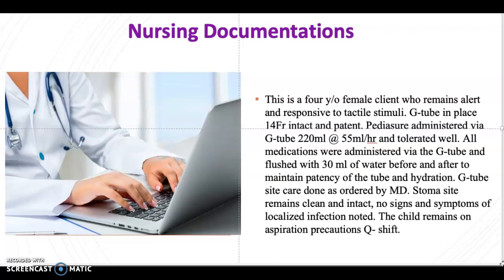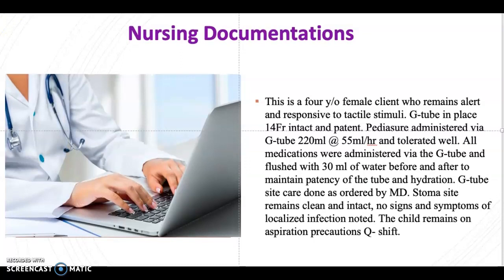The child remains on aspiration precautions every shift. We have to mention this because patients on a G-tube are at increased risk for aspiration. As nurses, when feeding is in progress, we must elevate the head of the bed at a 45 to 90 degree angle in order to minimize the risk of aspiration. I hope you take away some points from this short video on documentation.